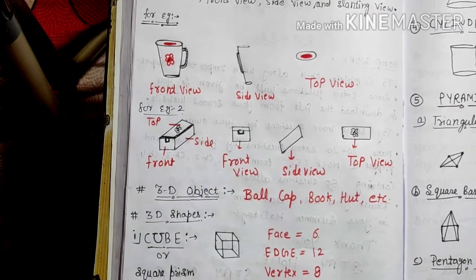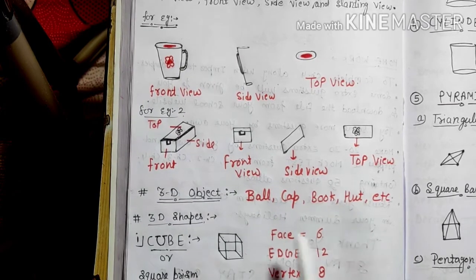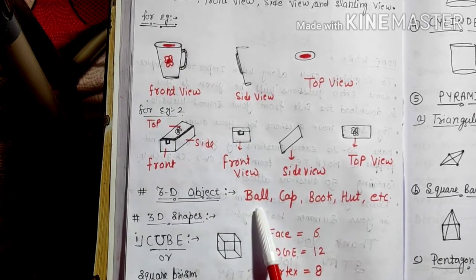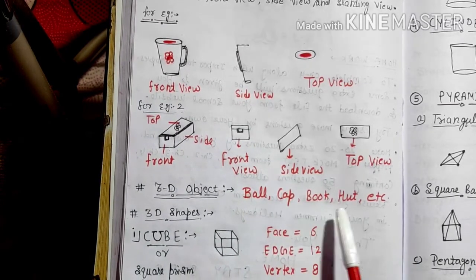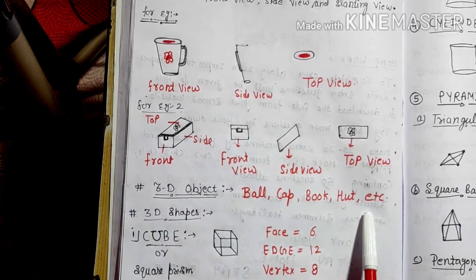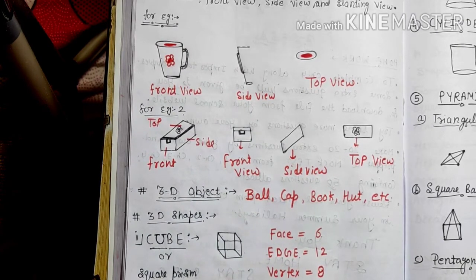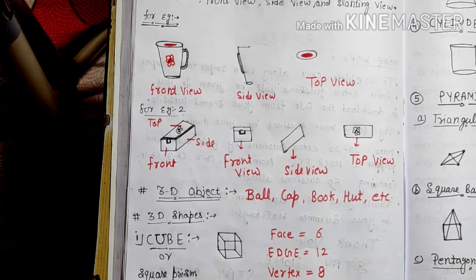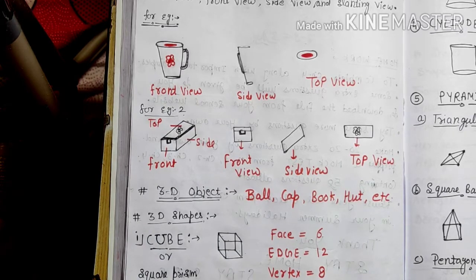Some examples of 3D objects are: ball, cap, book, hut, duster, chalk, glass, LED TV — these are all 3D objects. Let us consider some 3D shapes and try to understand the face, edge, and vertex of all these objects.